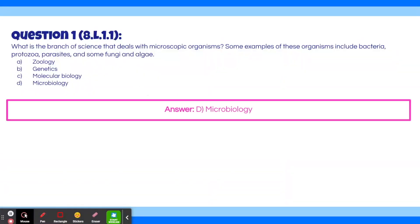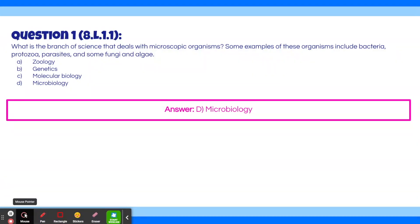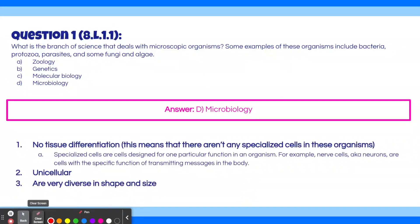The answer is D, microbiology. So the organisms listed in this question are bacteria, protozoa, parasites, and some fungi and algae. What qualities qualify these organisms as the microscopic organisms studied in microbiology? There are three specific qualities that each of these organisms needs to have. The first quality is no tissue differentiation, meaning there aren't any specialized cells in these organisms. Specialized cells are cells designed for one particular function in an organism. For example, in humans, we have nerve cells,